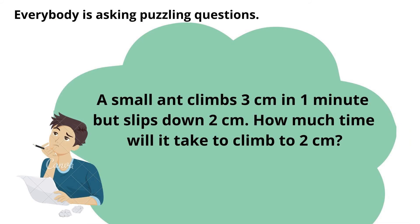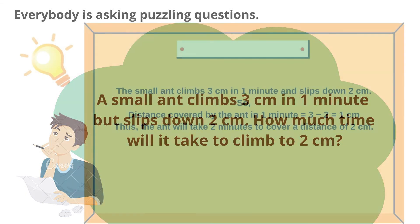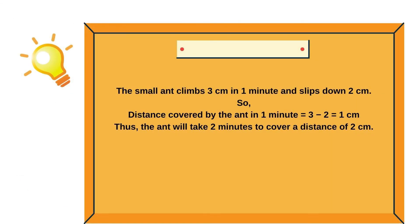A small ant climbs 3 cm in 1 minute but slips down 2 cm. How much time will it take to climb 2 cm? The small ant climbs 3 cm and slips down 2 cm, so distance covered in 1 minute is 3 minus 2, which equals 1 cm. Thus, the ant will take 2 minutes to cover a distance of 2 cm.